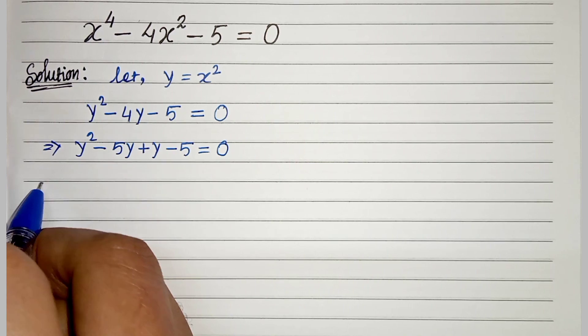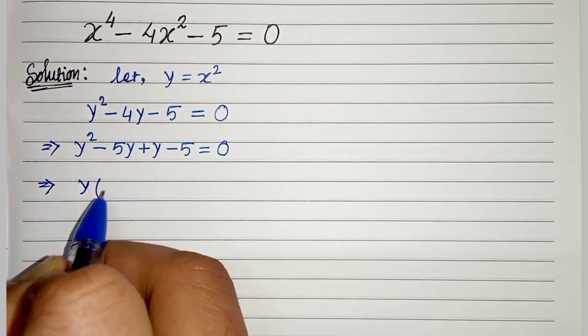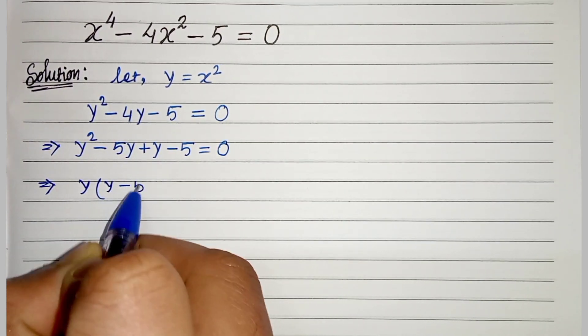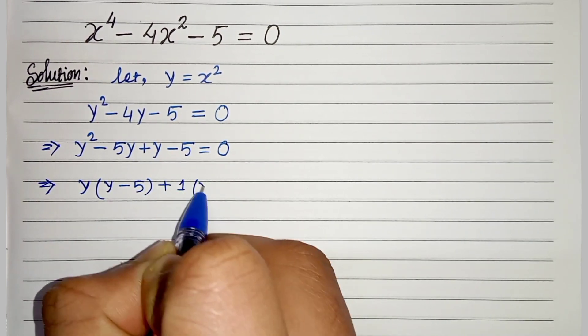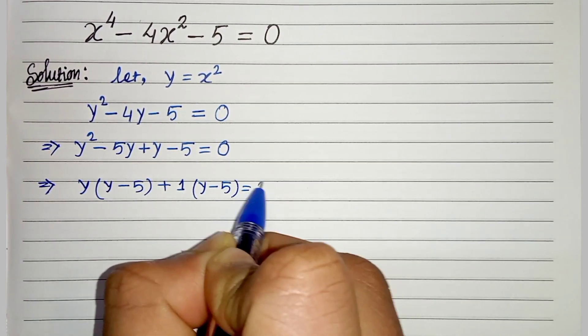In the next step, we will take common y. So y times y minus 5 plus 1 times y minus 5 equals to 0.